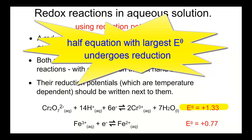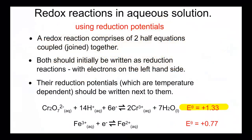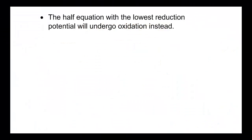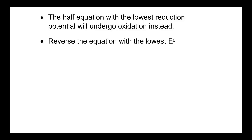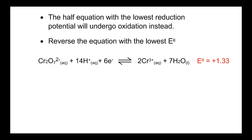Well, first, the half-equation with the largest E-theta value does undergo reduction — it has, after all, the greater reduction potential. And since oxidation and reduction always occur together, that means the half-equation with the lowest reduction potential needs to be reversed and presented as oxidation instead. So reverse the half-equation with the lower reduction potential.